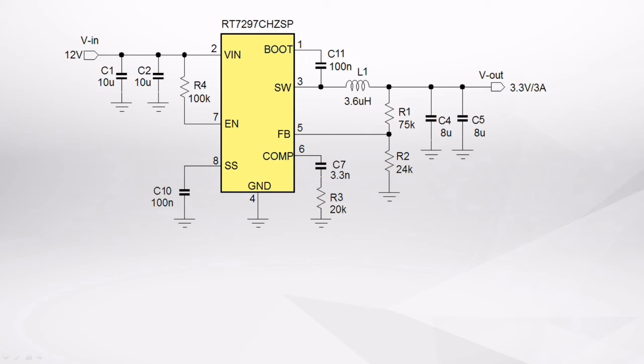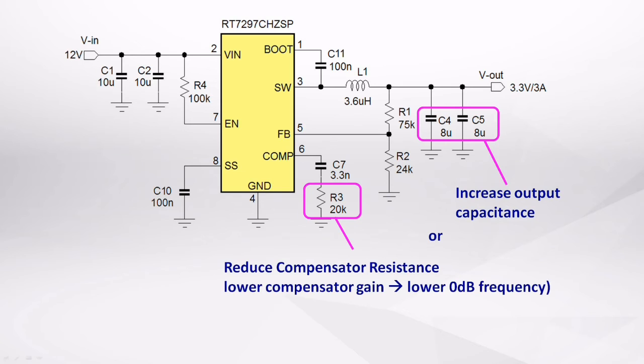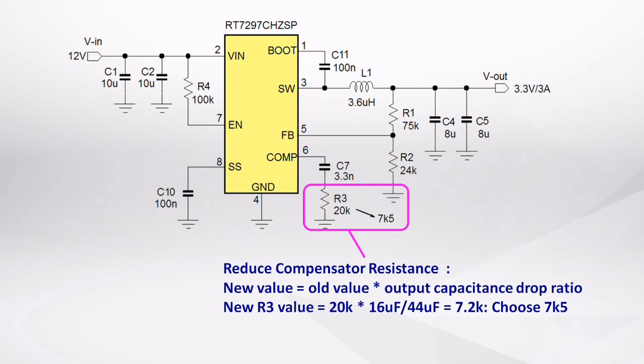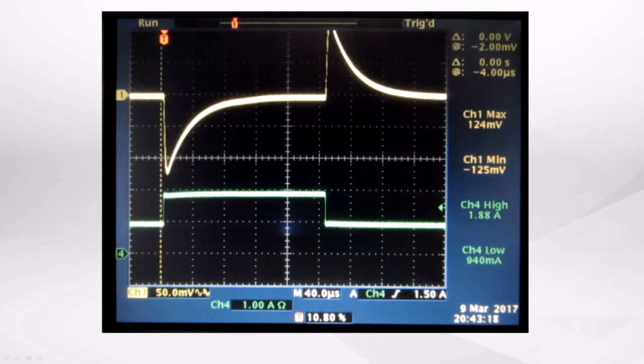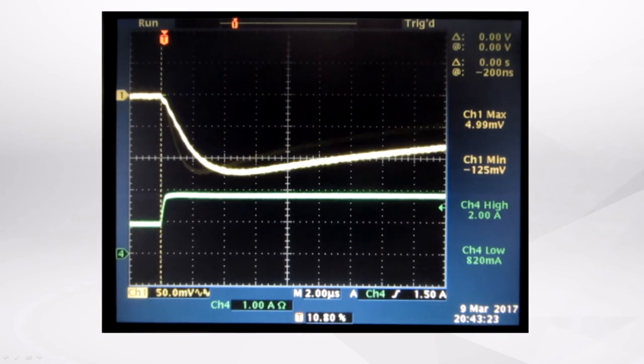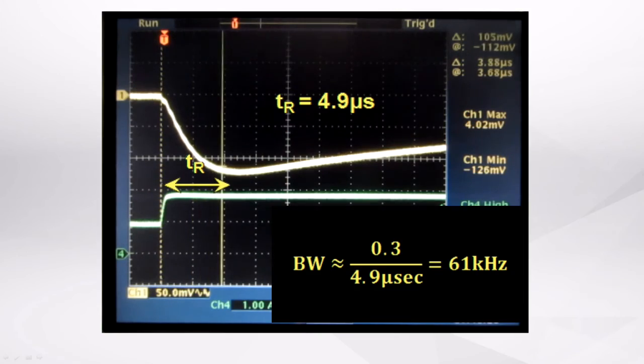To get stable performance again, you can either increase the output capacitance, or reduce the compensator gain to reduce the unity gain frequency. In this example, I chose to reduce the compensator gain by reducing the compensator resistor in the same ratio as the output capacitance drop. You now see stable performance again, and the response time measurement shows that the bandwidth has dropped to 61 kHz, which is a good target value for this converter.